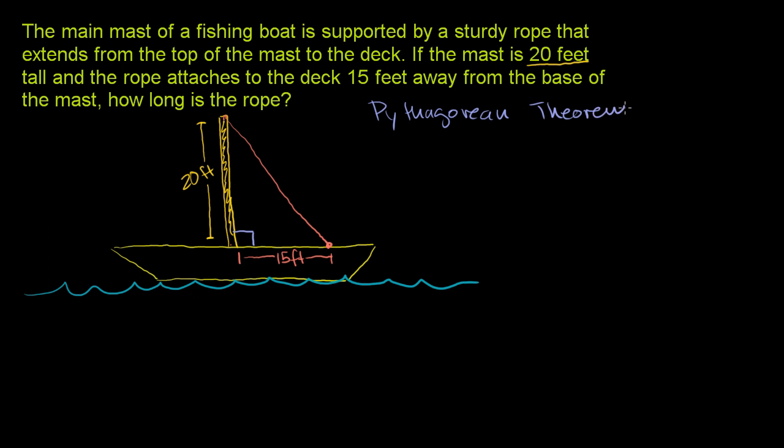And all that tells us is that the sum of the squares of the shorter sides of the triangle are going to be equal to the square of the longer side. And that longer side is called the hypotenuse. And in all cases, the hypotenuse is the side opposite the 90 degree angle. It's always going to be the longest side of our right triangle. So we need to figure out the hypotenuse here. We know the lengths of the two shorter sides.